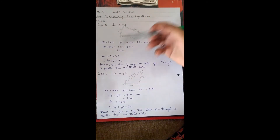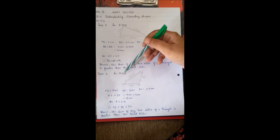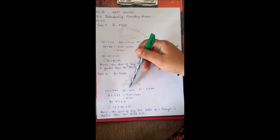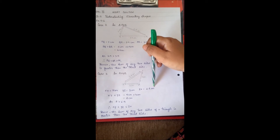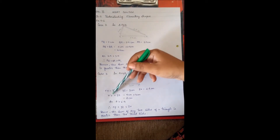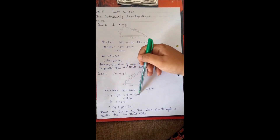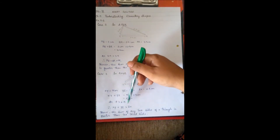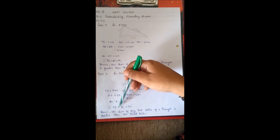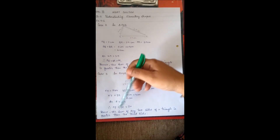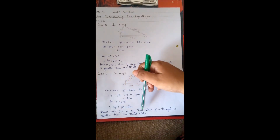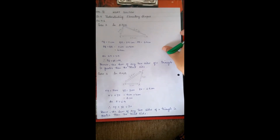Case 3 — Triangle XYZ: XY = 5 cm, YZ = 3 cm, ZX = 6.8 cm. XY + YZ = 8 cm, which is more than 6.8 cm. Therefore XY + YZ > ZX. Hence the sum of any two sides of a triangle is greater than the third side.